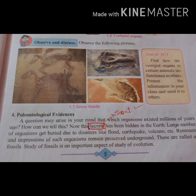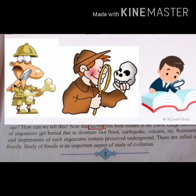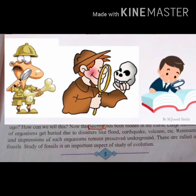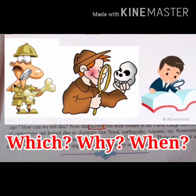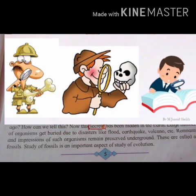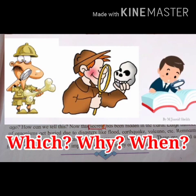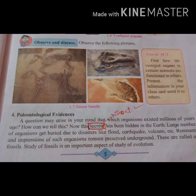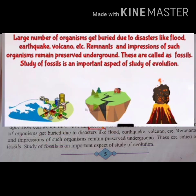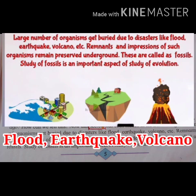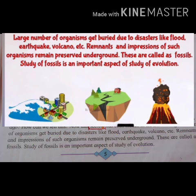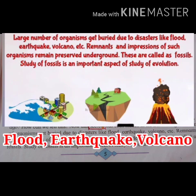Evidences of evolution — paleontological evidences. A question may arise in your mind: which organisms existed millions of years ago? How can we tell this? This secret has been hidden in the earth. A large number of organisms get buried due to disasters like floods, earthquakes, volcanoes, etc. Many organisms have been buried in the earth during times of such natural calamities.